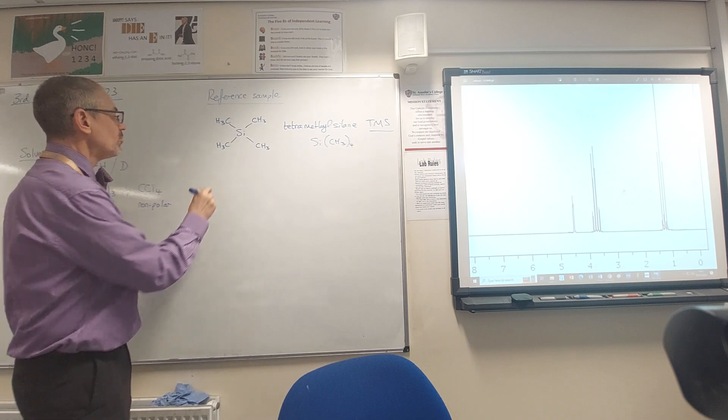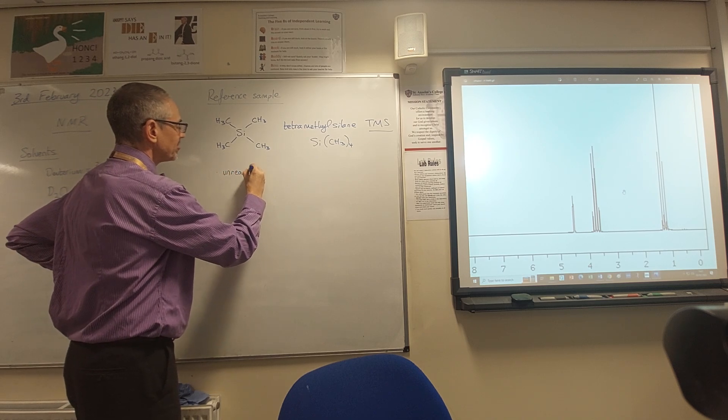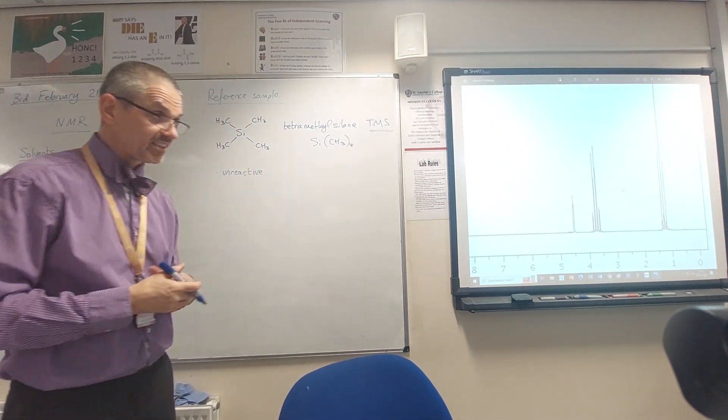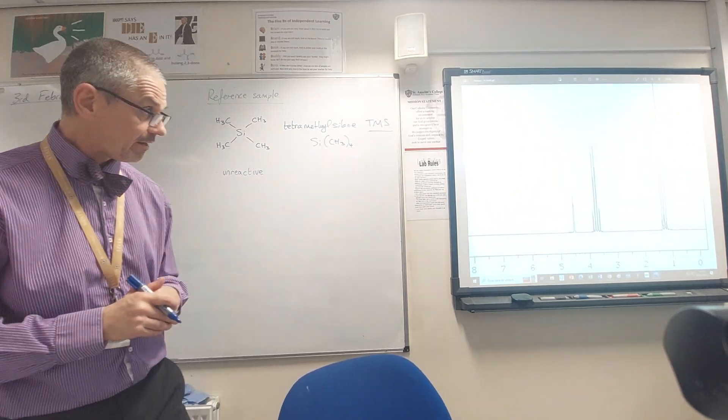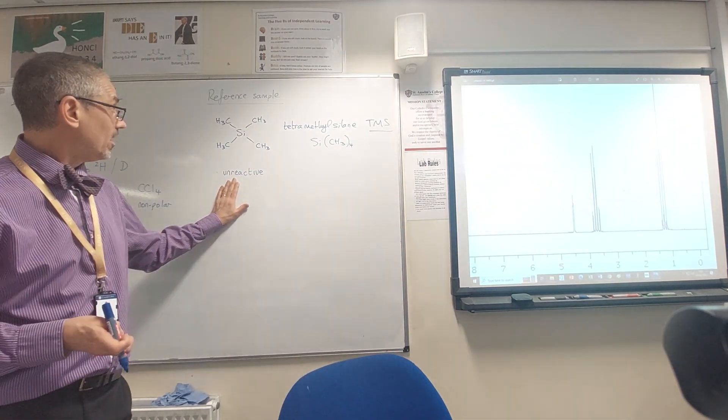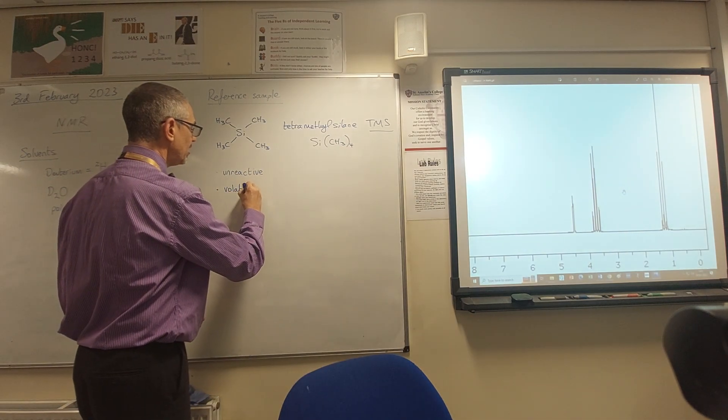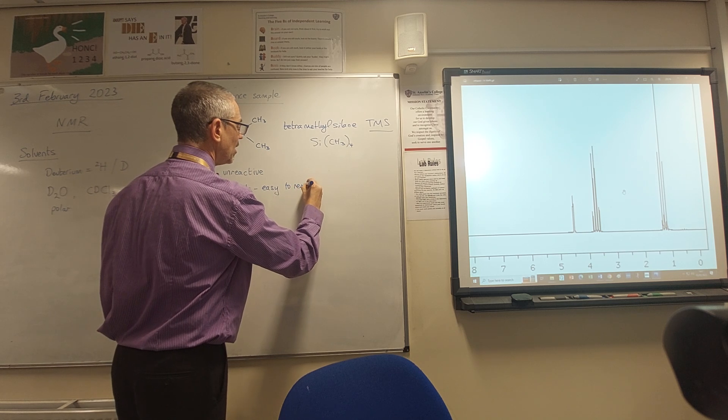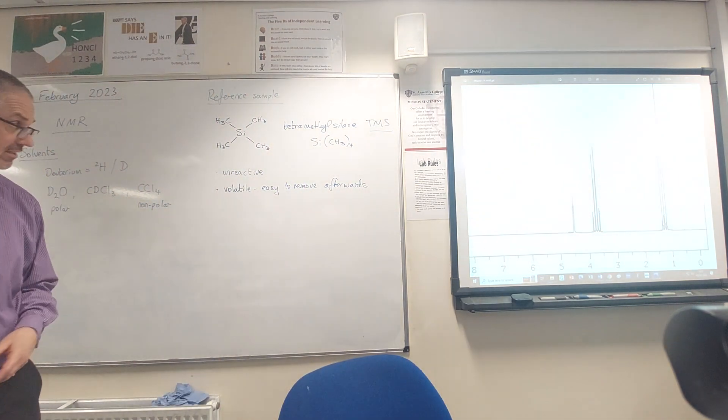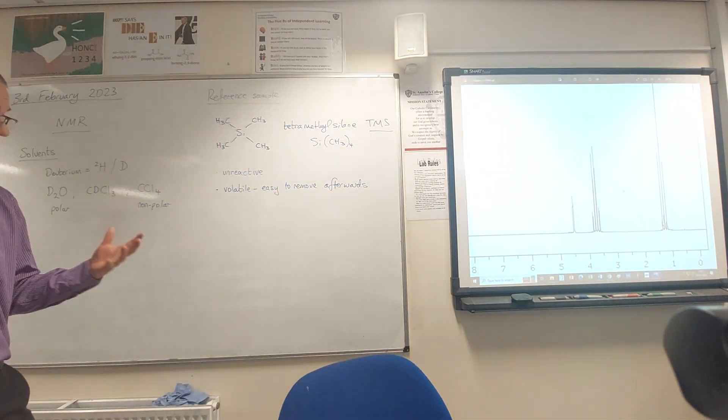Why do we like TMS? Well for a start it's pretty non-toxic but it's also unreactive. Remember you might not have much of your sample that you were putting into the NMR machine. We might have only made a couple of hundred milligrams and we don't want to throw it away afterwards and we don't want it to react with anything, so we use a reference sample that's not going to react with it. It's also fairly volatile which means that it's easy to remove afterwards. So we can just evaporate the TMS off afterwards and separate it from our all-important sample.